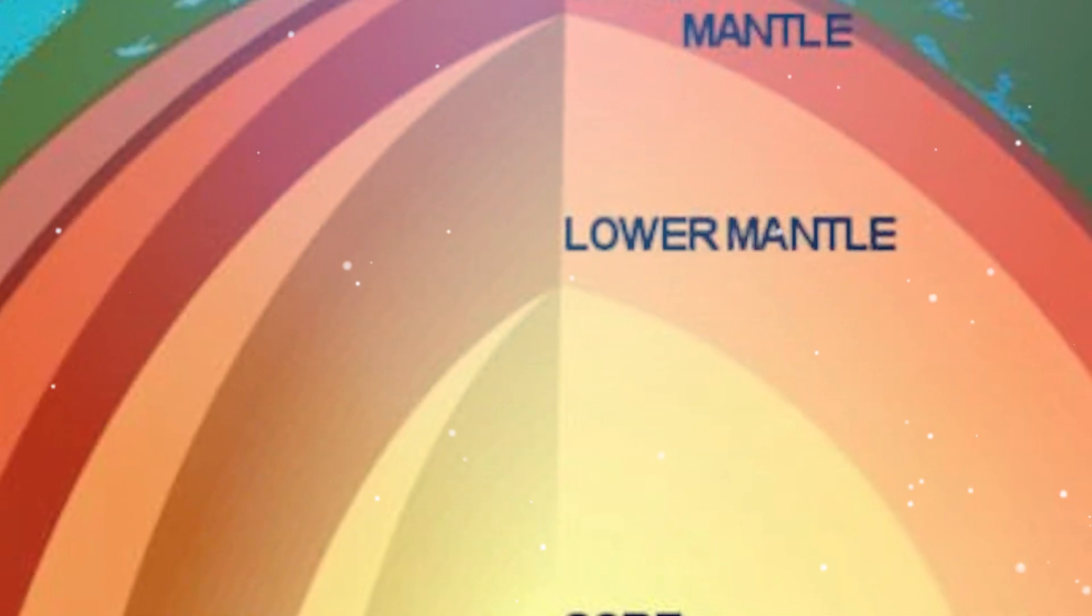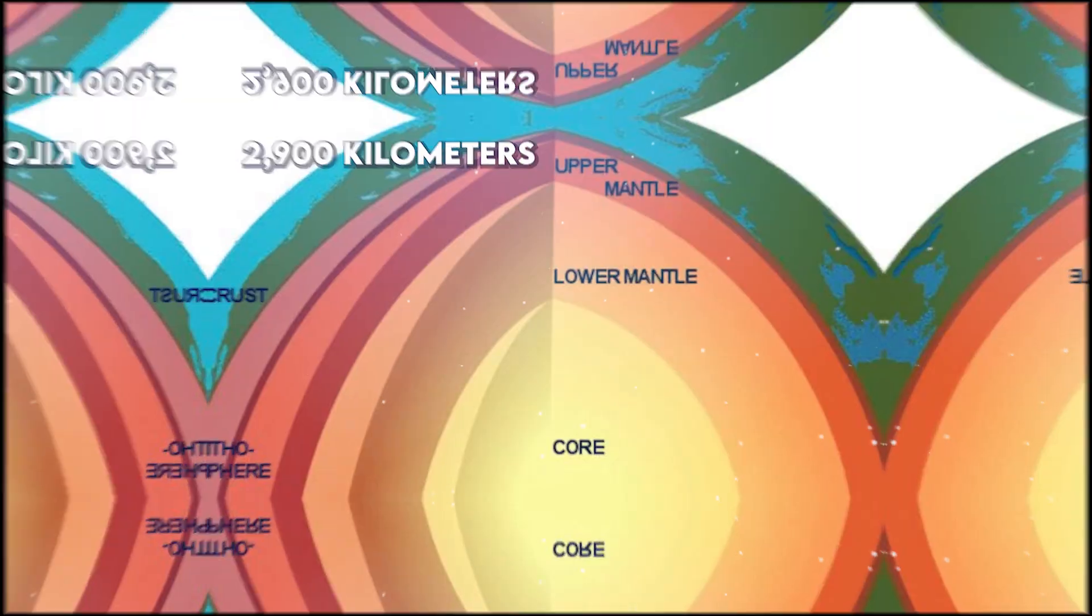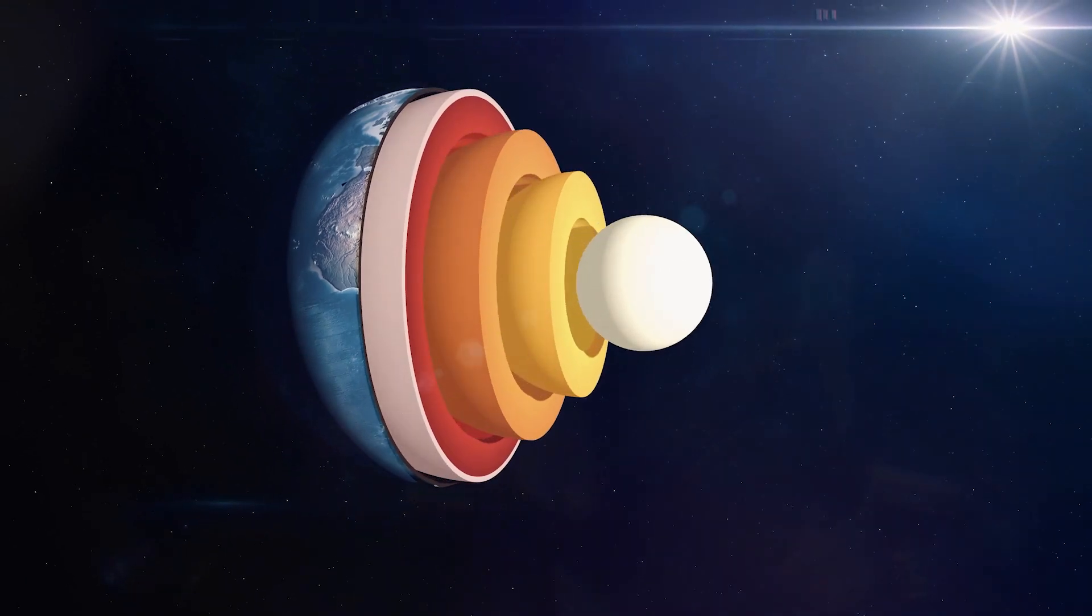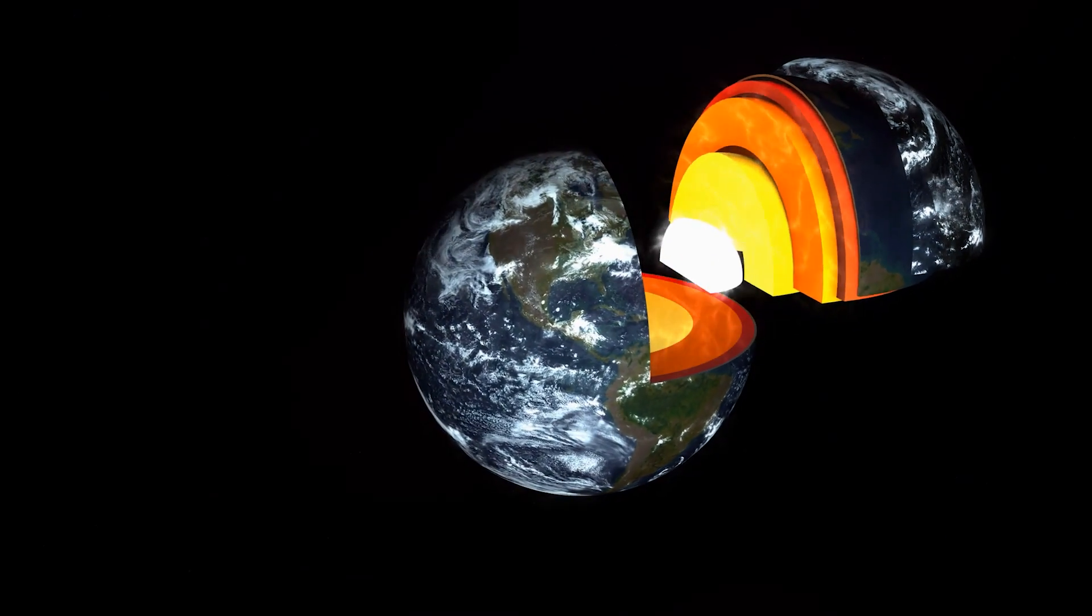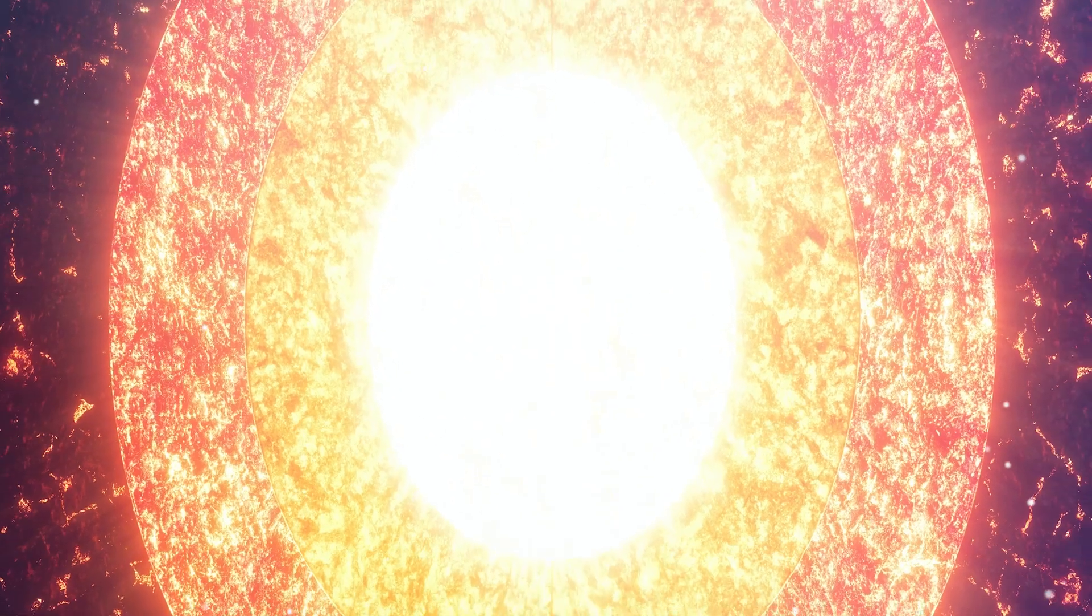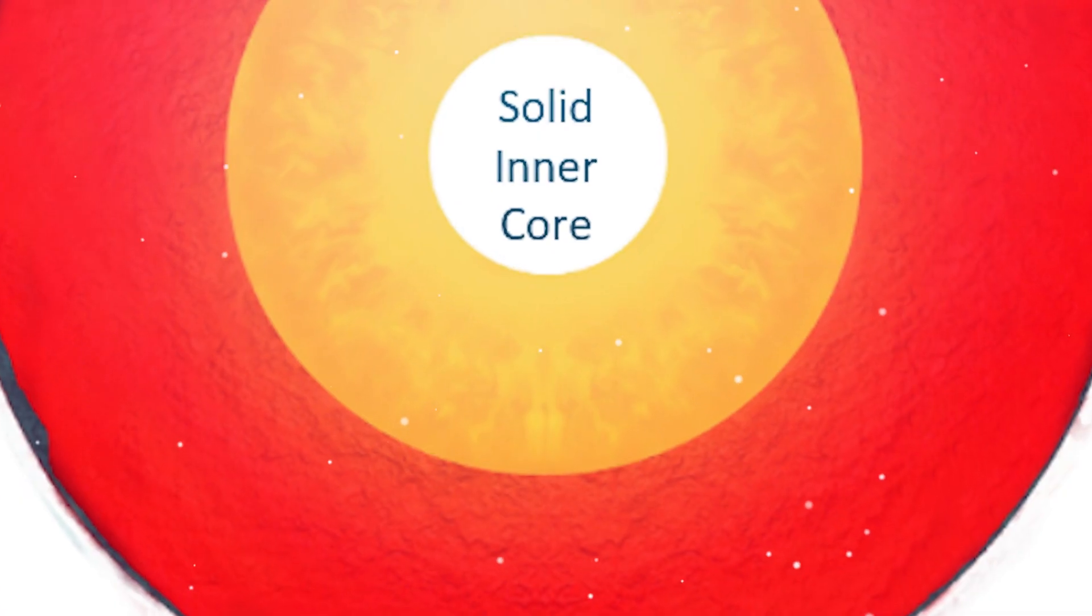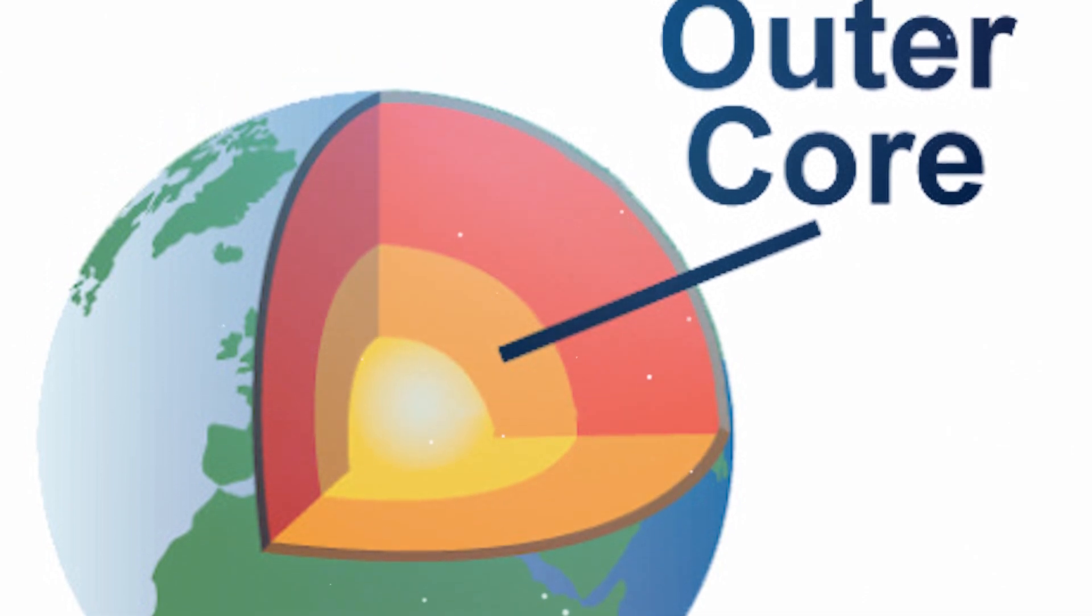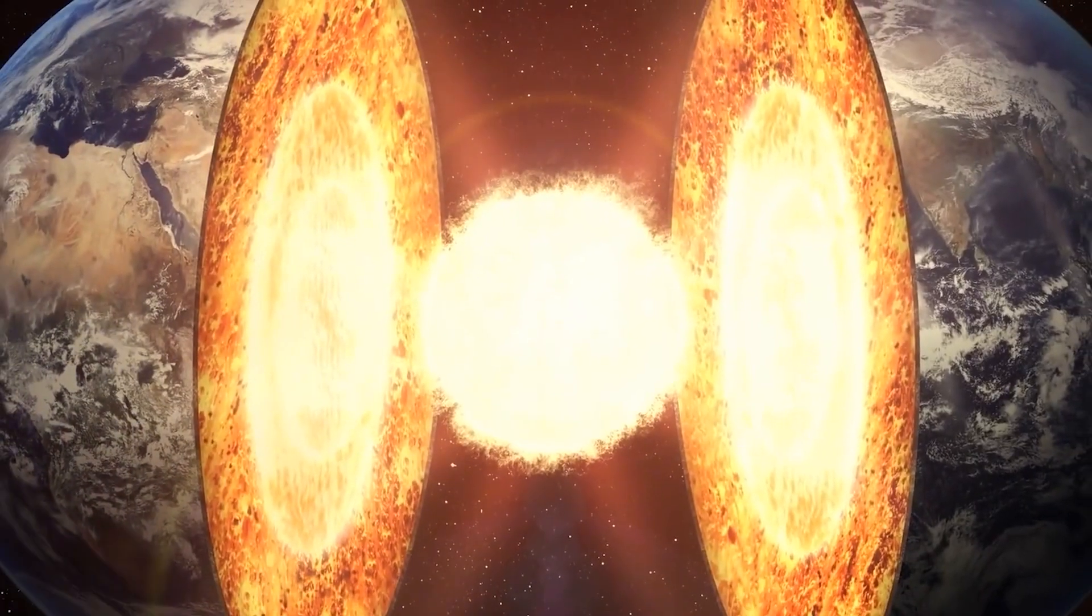Dive straight into the heart of the matter—the core. This is where things get intense, like the central powerhouse that keeps the Earth ticking. So what's happening at the Earth's core? Well, it's divided into two main parts: the outer core and the inner core. Picture it as the Earth's own hot and solid duo. First up, the outer core. It's a bit like a boiling pot of liquid iron and nickel. It's scorching hot down there, but not quite enough to make things boil in the way you might imagine.